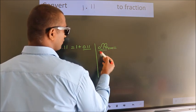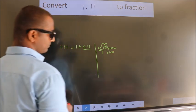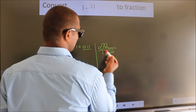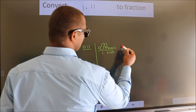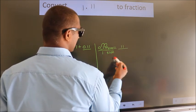Whatever we are multiplying in the numerator, in the denominator also we should do the same. Next, 0.11 into 100, we get 11. In the denominator, 1 into 100, 100.